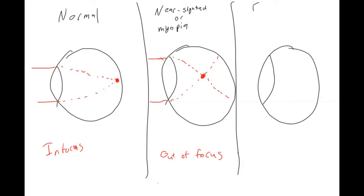And then the other type that you have is farsighted or hyperopia. And here, the focus is somewhere behind your eye. And so again, it's out of focus.